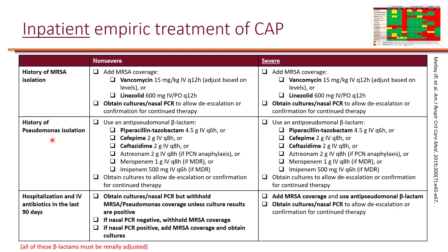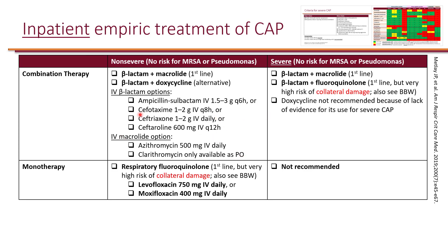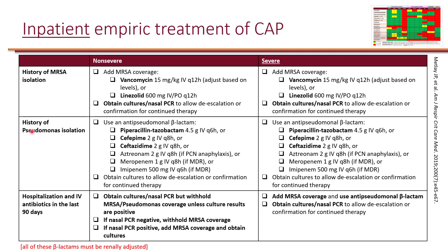When it comes to a history of pseudomonas isolation, depending on your treatment regimen, all you have to do is make sure you use a beta-lactam that covers pseudomonas. For example, if you had chosen ceftriaxone and your patient has a history of pseudomonas isolation, instead of ceftriaxone you would use an anti-pseudomonal beta-lactam — either pip-tazo, cefepime, or ceftazidime. For patients who have penicillin allergy with anaphylaxis, we can use aztreonam because it doesn't have the same side chain as the other beta-lactams, with the exception of ceftazidime, and the core structure is very different, making cross-reactivity less likely.